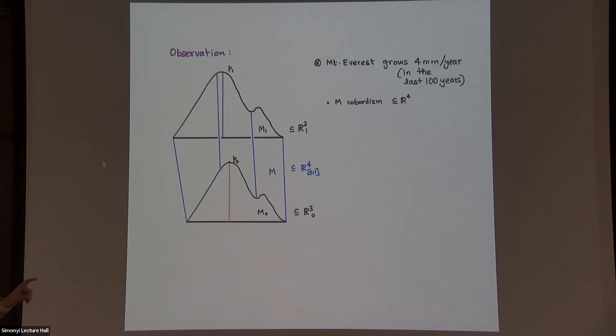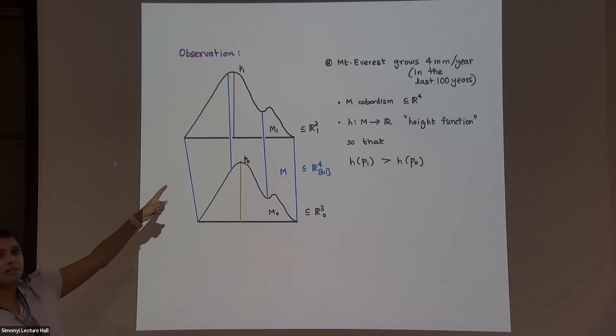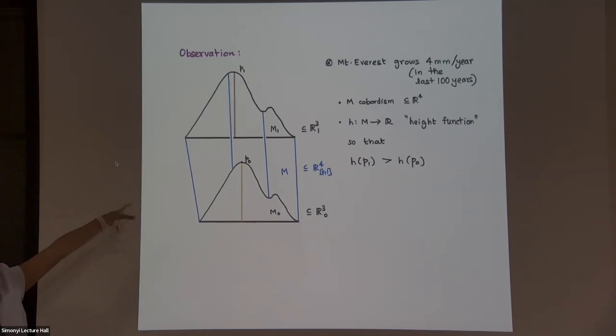Now I'm going to put this into language that makes me more comfortable. Suppose for each time slice, you have an R3 with Mount Everest sitting in it. So you have this Mount Everest cross interval sitting on R4, with a slightly smaller Mount Everest on this side and a slightly larger Mount Everest on that side. And what this means is that M, Mount Everest, this is a cobordism.